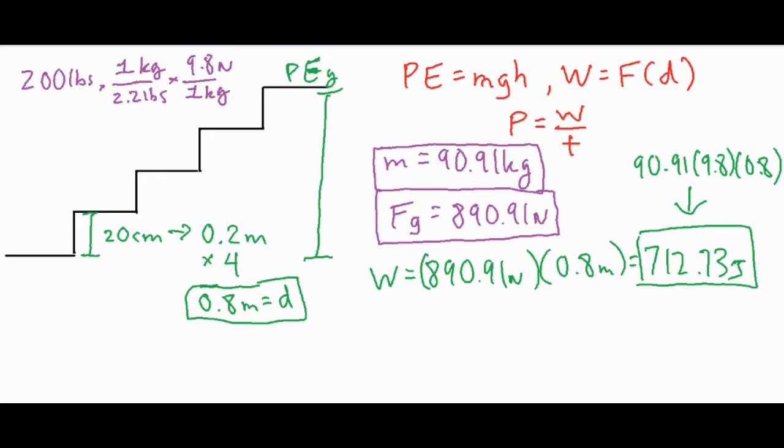For our work value, 712.73 joules, because your gain in potential energy is the same thing as your work done, the amount of energy transferred. Now what we're going to do next is go ahead and find the value for the power.